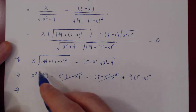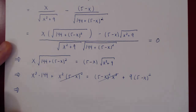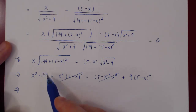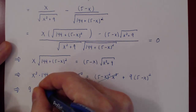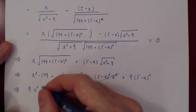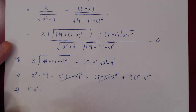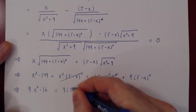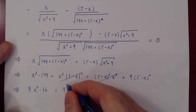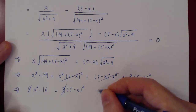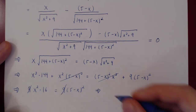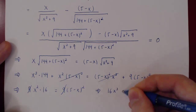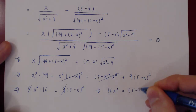Let's cancel common factors between 9 and 144. Since 144 = 9 × 16, we have 9·16·x² = 9·(5−x)². Canceling the 9 from both sides gives us simply 16x² = (5−x)².